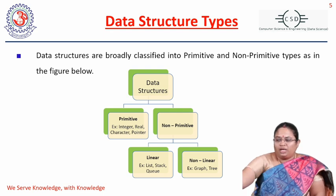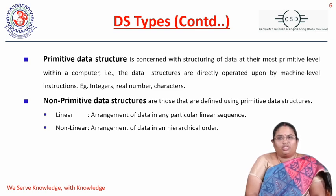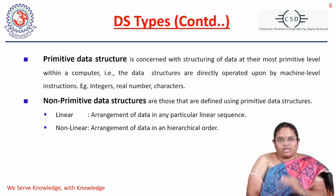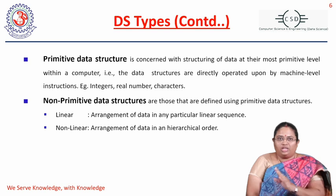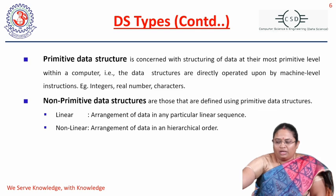Non-primitive means nothing but data structures defined using the primitive data structures. Primitive data structures are defined at the most primitive level that the compiler accepts, operating directly on machine-level instructions — our processors support these data structures. Non-primitive data structures are defined using these primitive ones. In linear structures, data is arranged in a linear sequence; in non-linear structures, data is arranged in a hierarchical order.